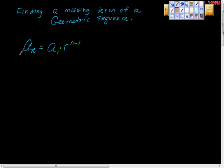I want to remind you I'm not teaching you this part — I'm assuming you know this. All this says is that the nth term of a geometric sequence is the same as the first term times some common ratio to the power of n minus 1.